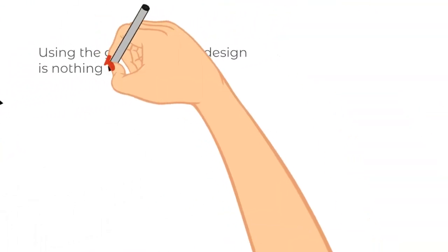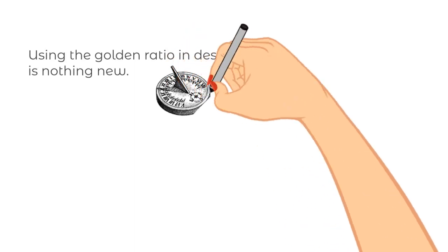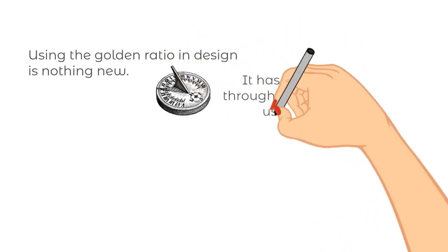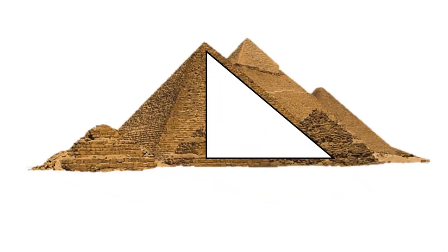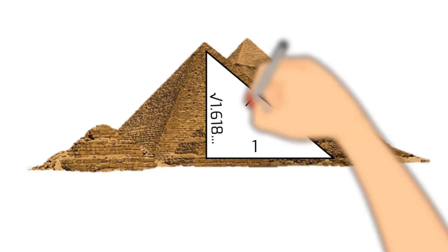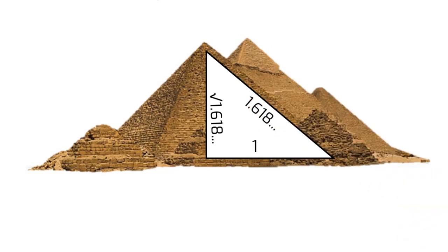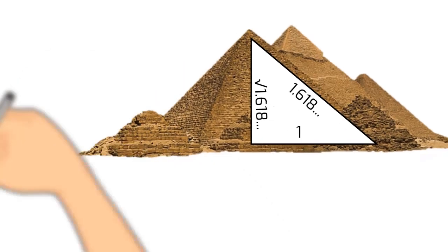Using the golden ratio in design is nothing new. It has been used throughout time by us, mankind. Take a look at ancient pyramids for example. You'll notice if you were to take the ratio of the base, the heights and the slanted length, it would be in the golden ratio. And you'll find this in architecture, new and old.